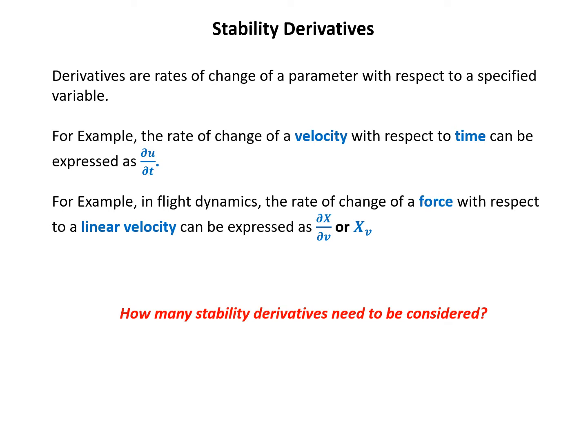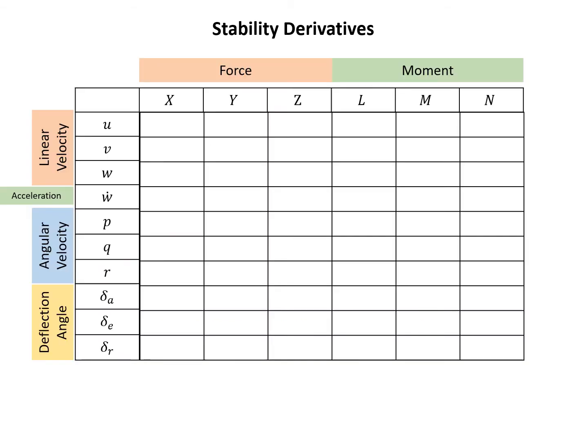Now we have the question: how many stability derivatives need to be considered in flight dynamics? To answer this, we have a table. In the first row, we have X, Y, Z — the forces — and L, M, N — the moments. In the first column, we have u, v, w — the linear velocities — then ẇ, the vertical velocity acceleration, followed by p, q, r — the angular velocities.